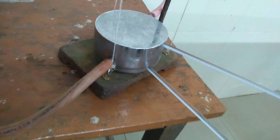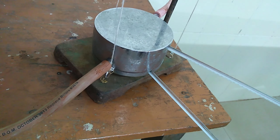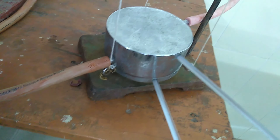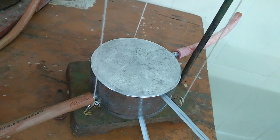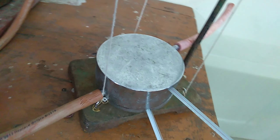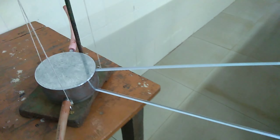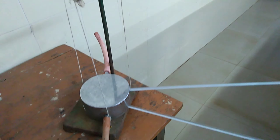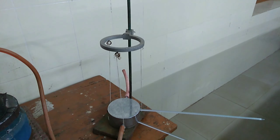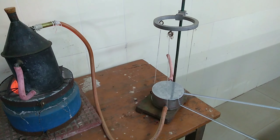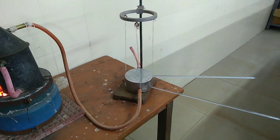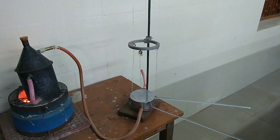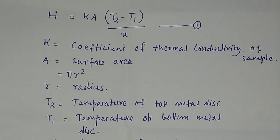When the steady state is reached, the temperature of the top metal disk read from thermometer T2 will be around 100 degrees Celsius. The temperature of the bottom metal disk read from thermometer T1 will be around 92 or 93 degrees Celsius — a difference of about 7 to 8 degrees Celsius.